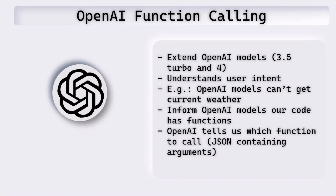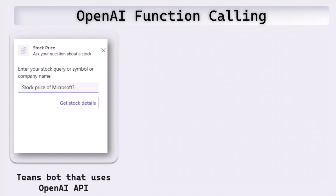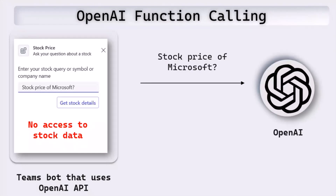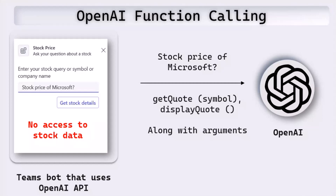Let's look at function calling in a bit more detail. Imagine this message extension did not have a function calling feature — if we ask for the stock price of Microsoft, OpenAI would say it doesn't have access to stock data. Now, if we introduce function calling, we take that question and send it to OpenAI along with a couple of functions we have in our code, such as get quote and display quote, passing their names and descriptions.